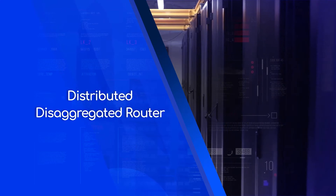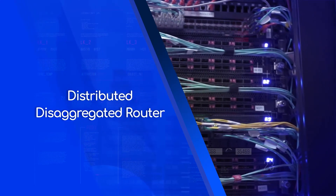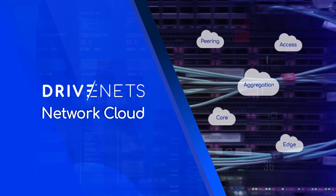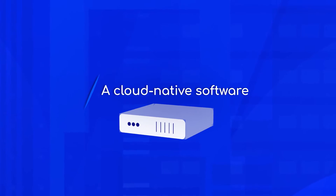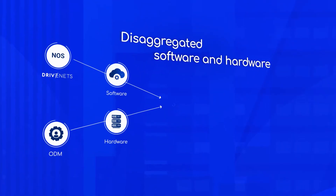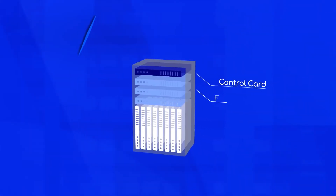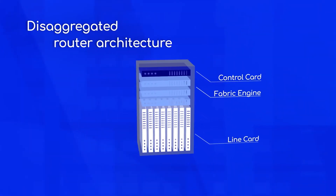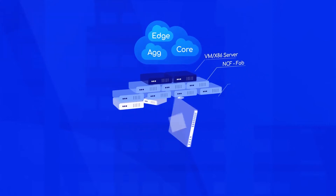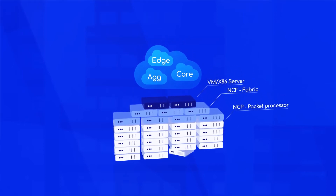So what is a distributed router? It is a new model which literally disaggregates the traditional chassis into its building blocks so they can scale. First, it starts with disaggregating the hardware and the software. The cloud-native software is from Drivenets, and the hardware is based on standard networking white boxes. Second, it disaggregates the control plane from the data plane. The data plane is based on two white-box building blocks: NCP and NCF.